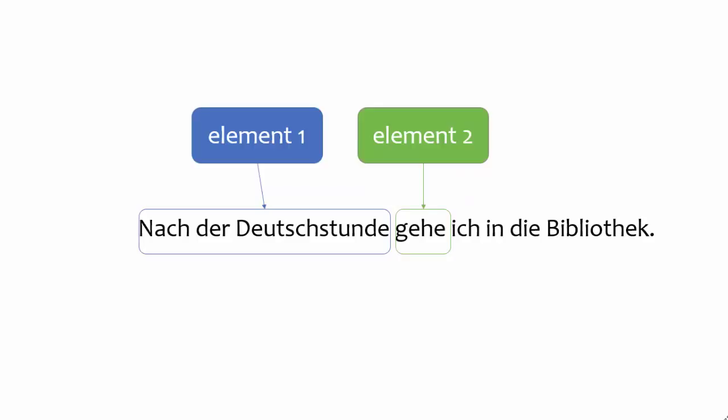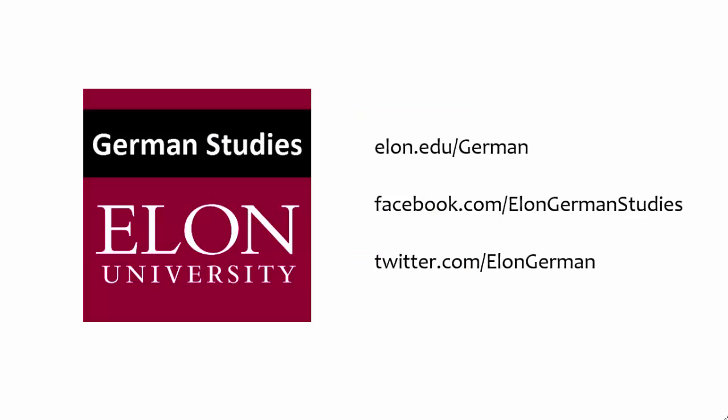To wrap up, in the sentence you see on your screen, the word order is correct. The phrase nach der Deutschstunde is the first element in the sentence. The conjugated verb is the second element, after which follows the subject and then the remainder of the sentence. That concludes our presentation.